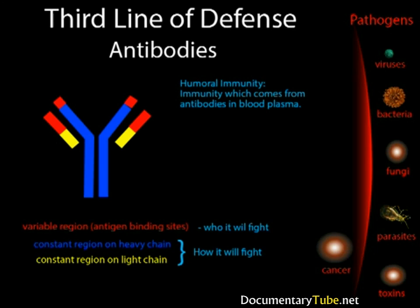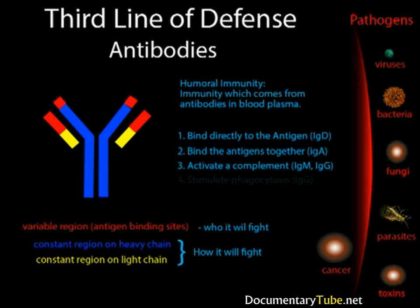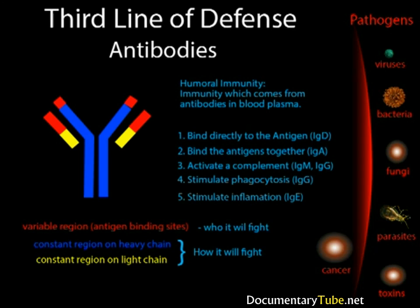One, they could bind directly to the antigen — the job of immunoglobulin D. They can bind antigens together — that would be immunoglobulin A. They can activate complement — the job of immunoglobulin M, though scientists have found that immunoglobulin G can do this as well. They can stimulate phagocytosis — immunoglobulin G's job. And they could stimulate inflammation — that would be immunoglobulin E.